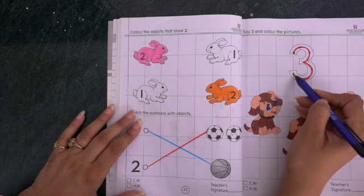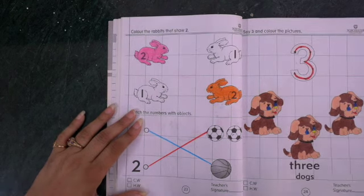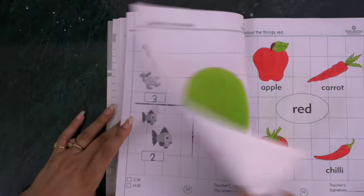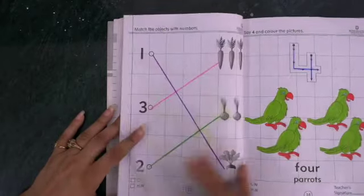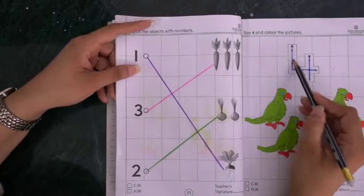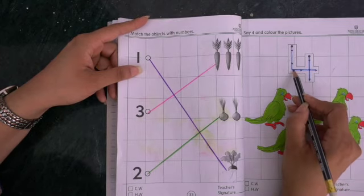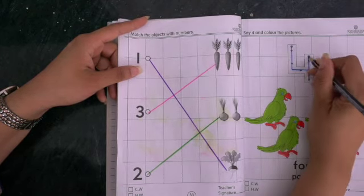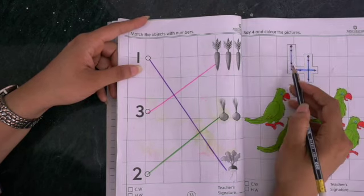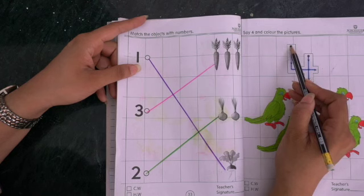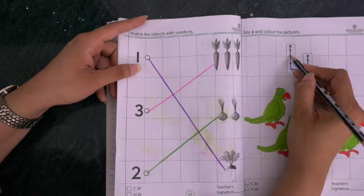Then we will start with number four. We start with this dot here, go all the way down, then we go on our right, and then right again up, and then all the way down. What do we make here? This is number four.